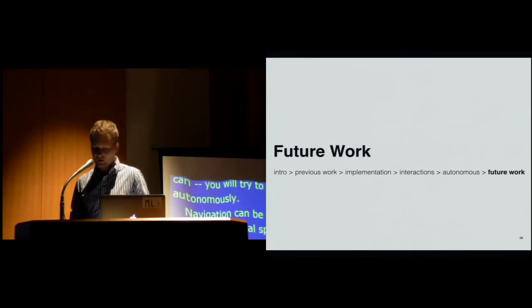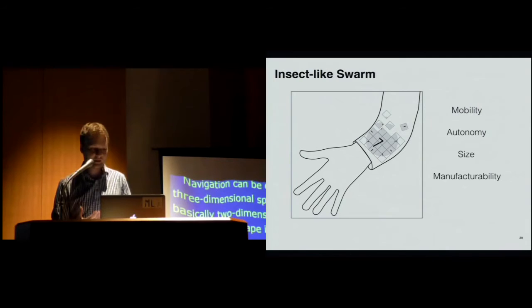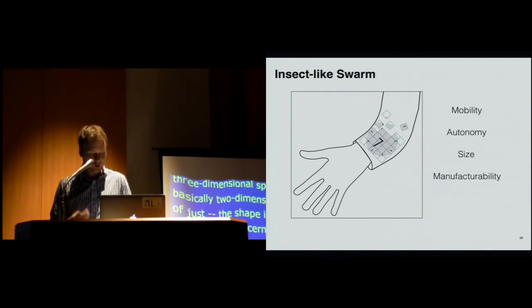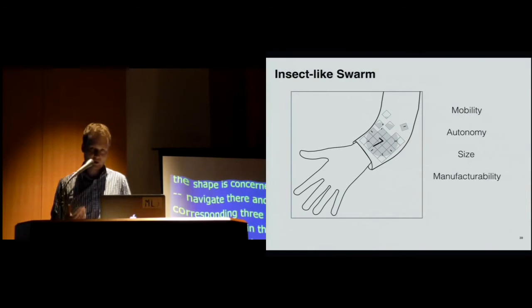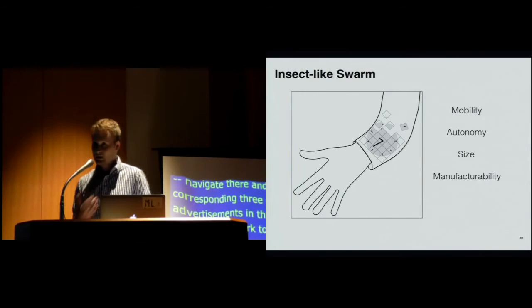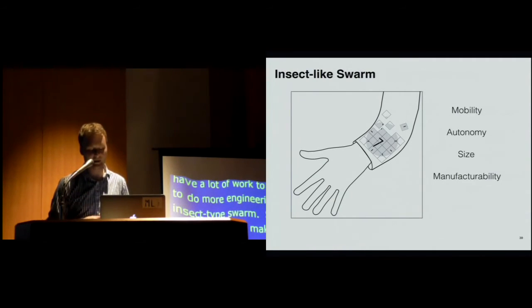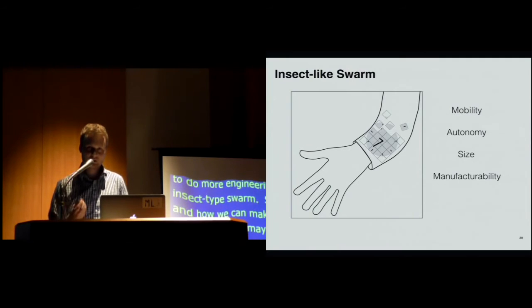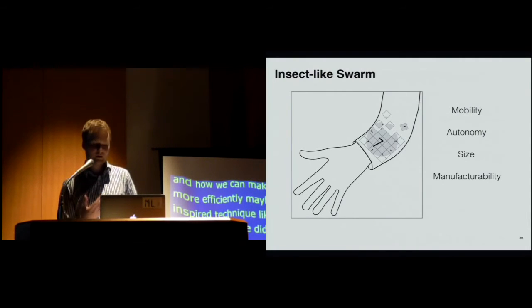So in the future work, we have a lot of things to do, such as it would be interesting to do more engineering and improve and make it actually into insect-like swarm of small robots. So there's mobility, how we can make it more efficiently, maybe using some kind of bio-inspired technique of Gecko's feet method or also improving the autonomy. We did a kind of very simple autonomous operation right now, but there's a lot of room to improve accuracy. Also the size, how we can make them smaller. The current limitations of the motors can be, but we found some motors which are about twice the current size of the motors and we are exploring that. And manufacturability, if we have to make a swarm of them, how can we do it in a factory reliably instead of doing it by hand?